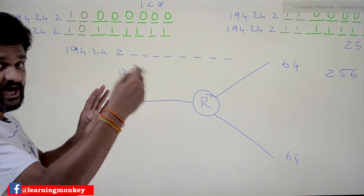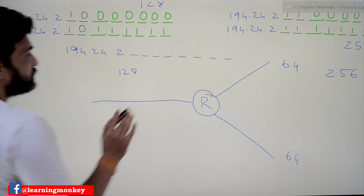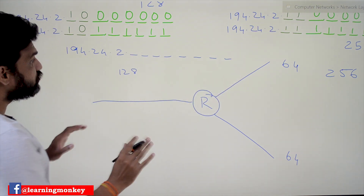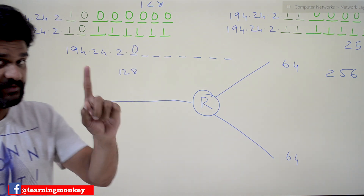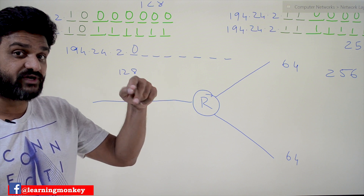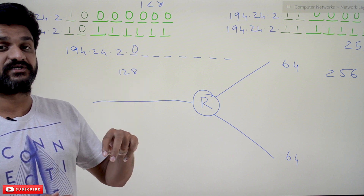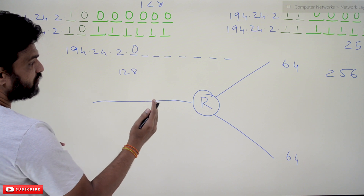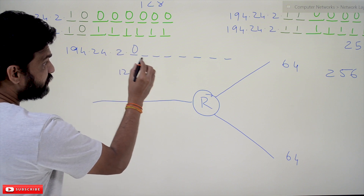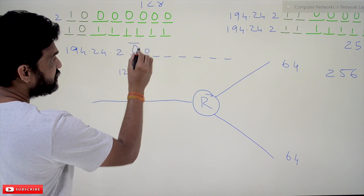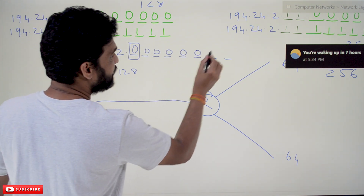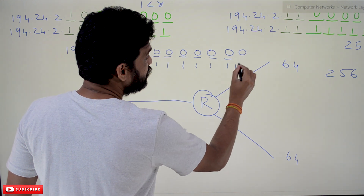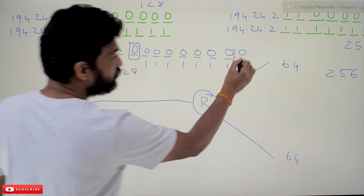We will consider the first approach: divide the entire 256 possibilities into two halves first, and then divide the remaining half into two halves again. Dividing 256 into two halves means we consider one bit. If you want to divide into four sub-networks you take two bits, eight sub-networks three bits, and so on. So we are dividing into two halves — one bit is taken. The subnet mask part is set, and the remaining host ID part is seven bits, ranging from zero to 127.